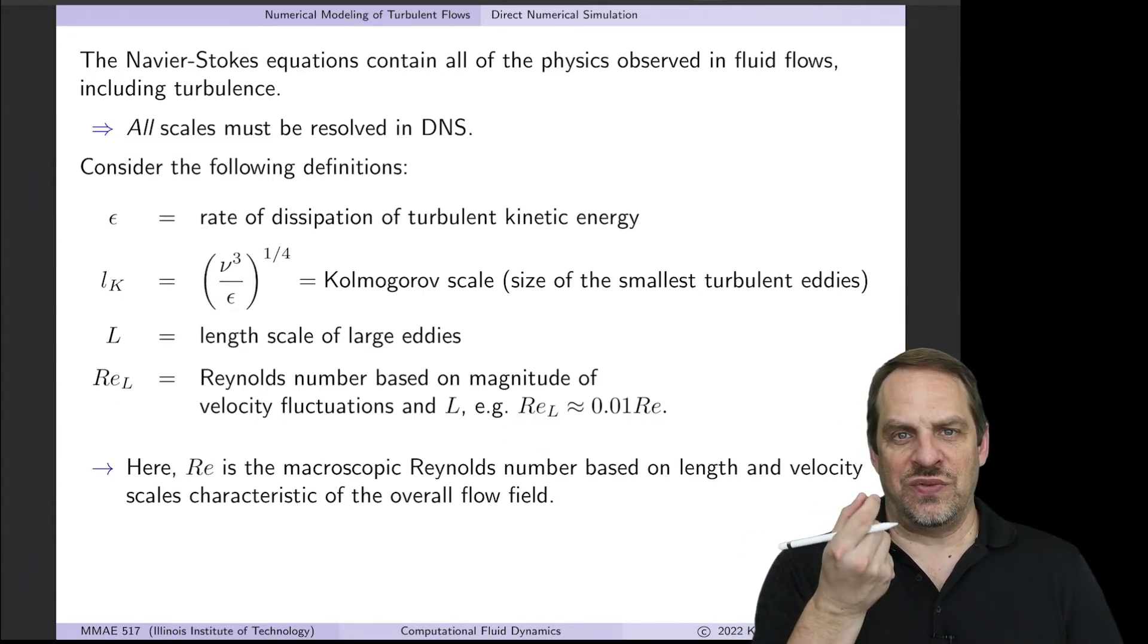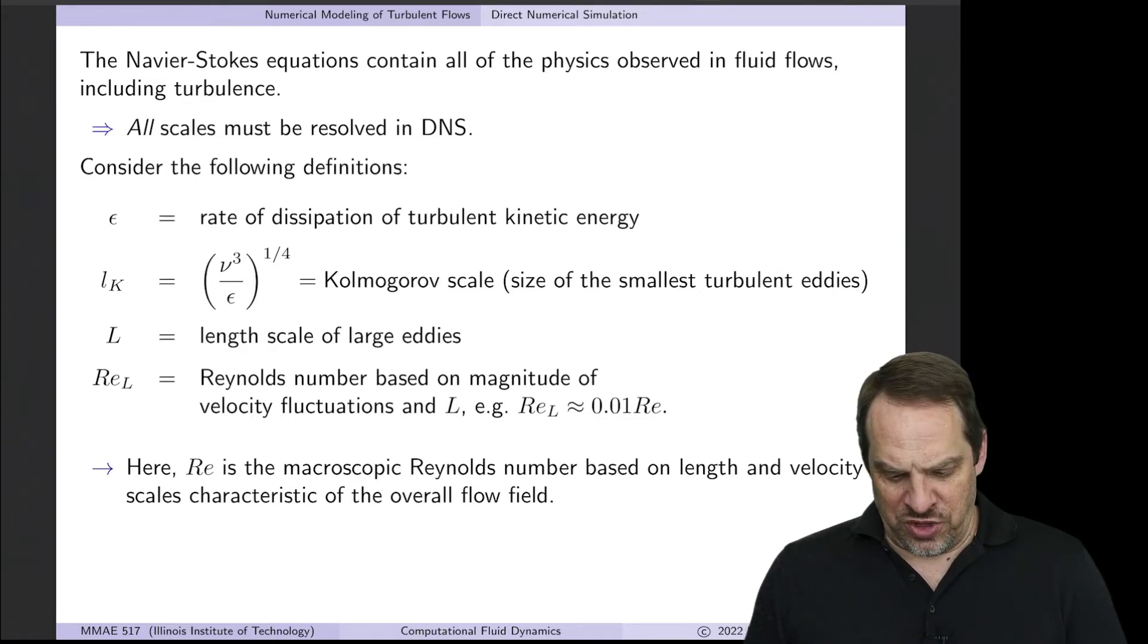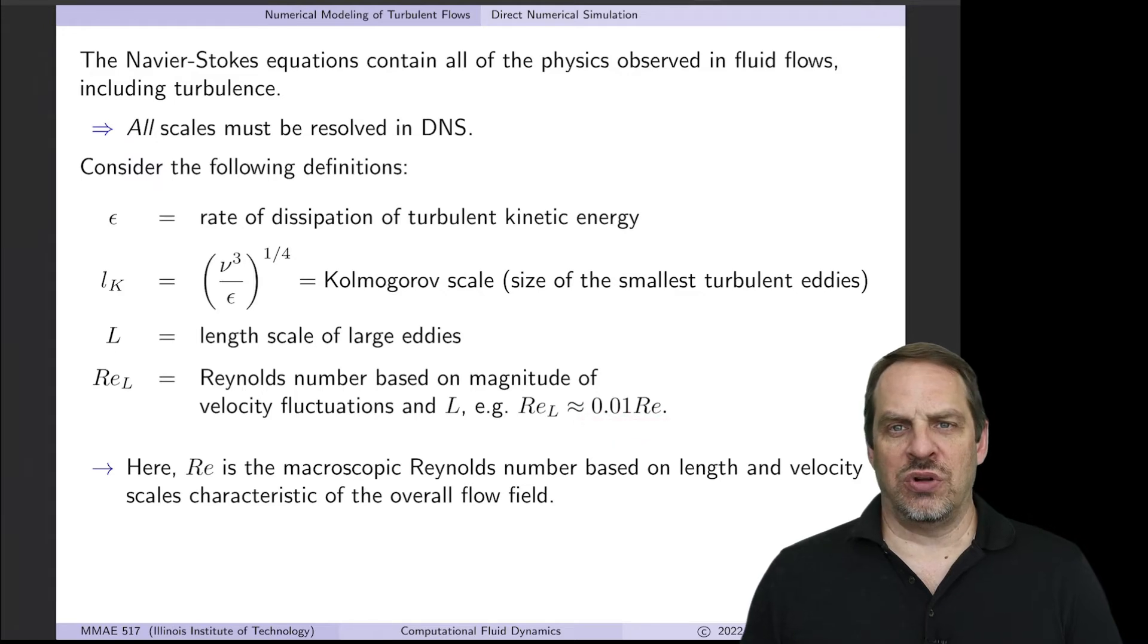Re_L has the same length scale, capital L, but the characteristic velocity is given by the velocity fluctuations. So just as a rule of thumb, Re_L is about 1% of the overall Reynolds number.